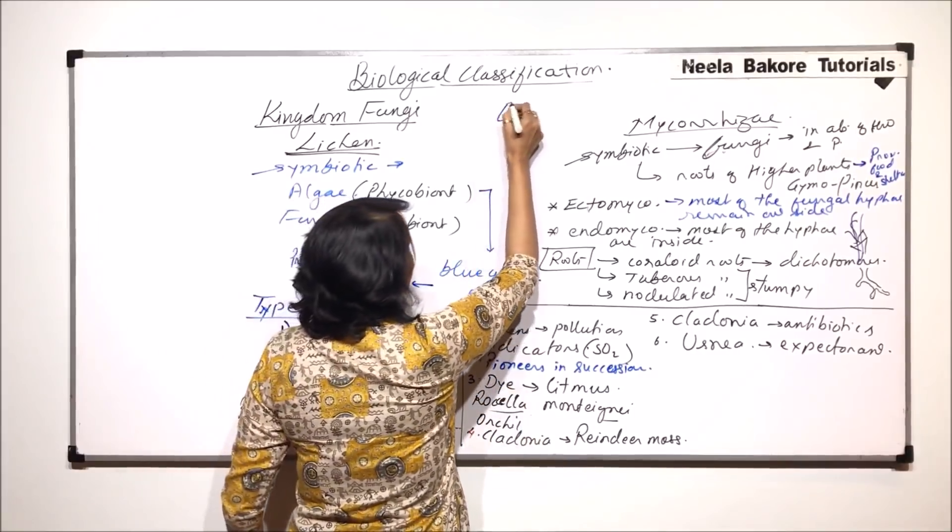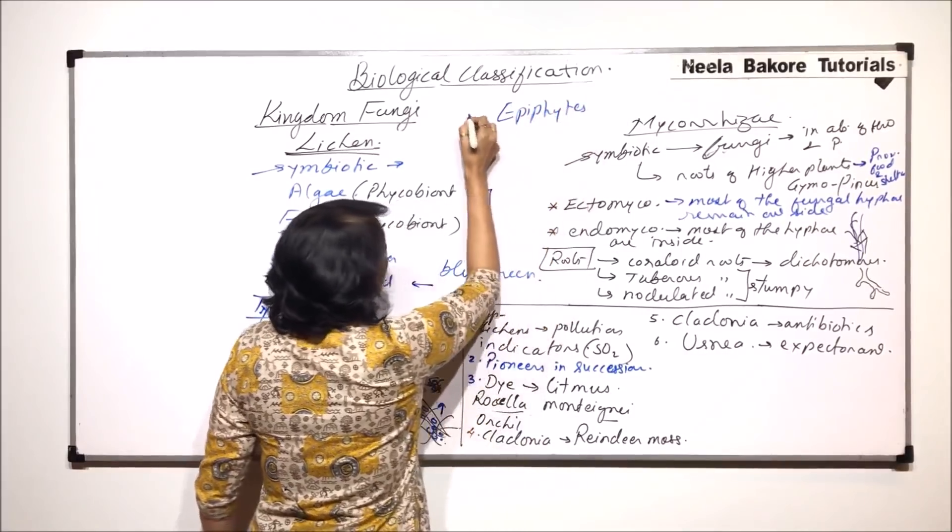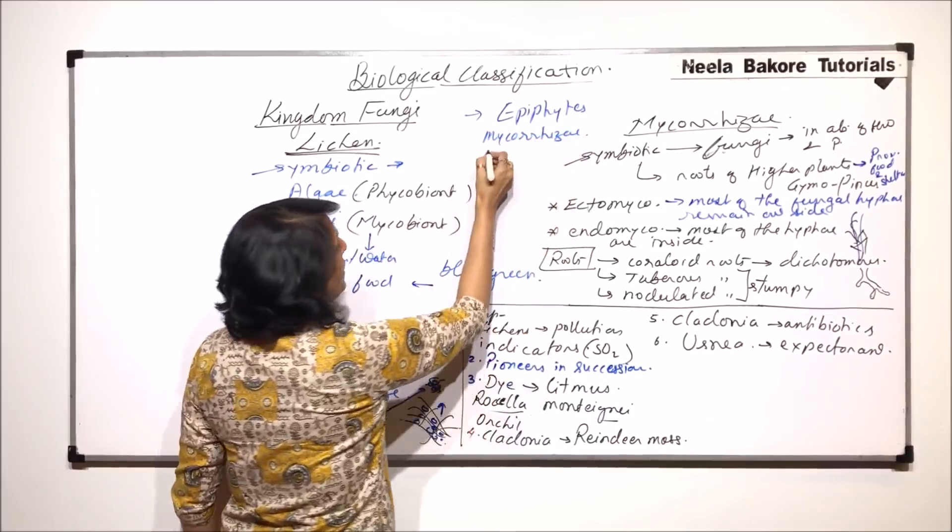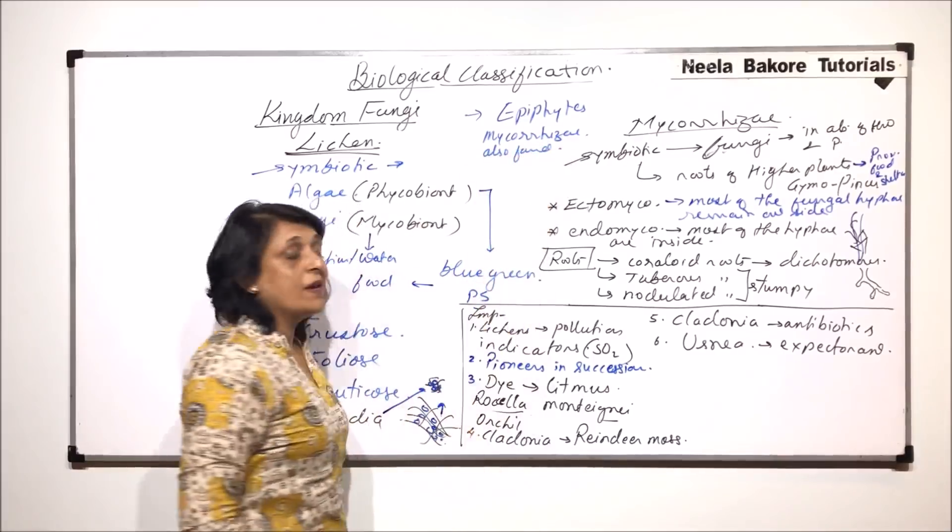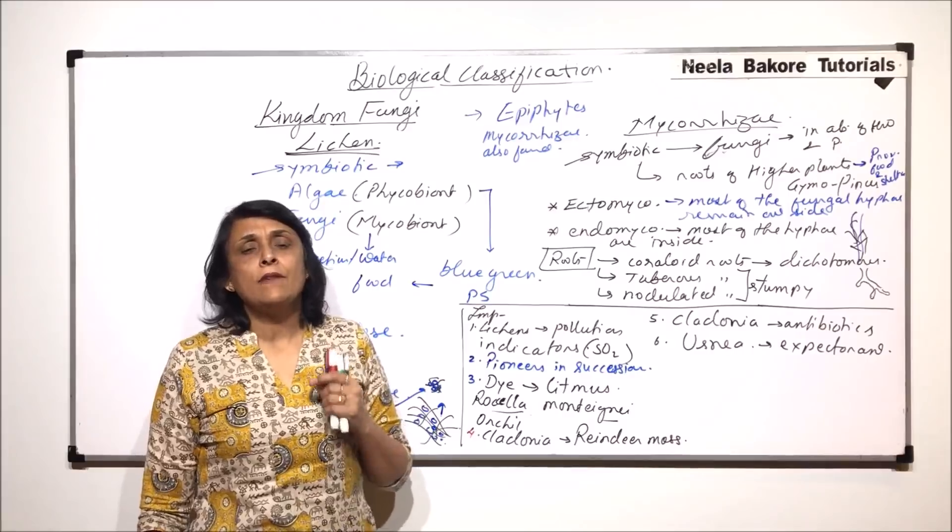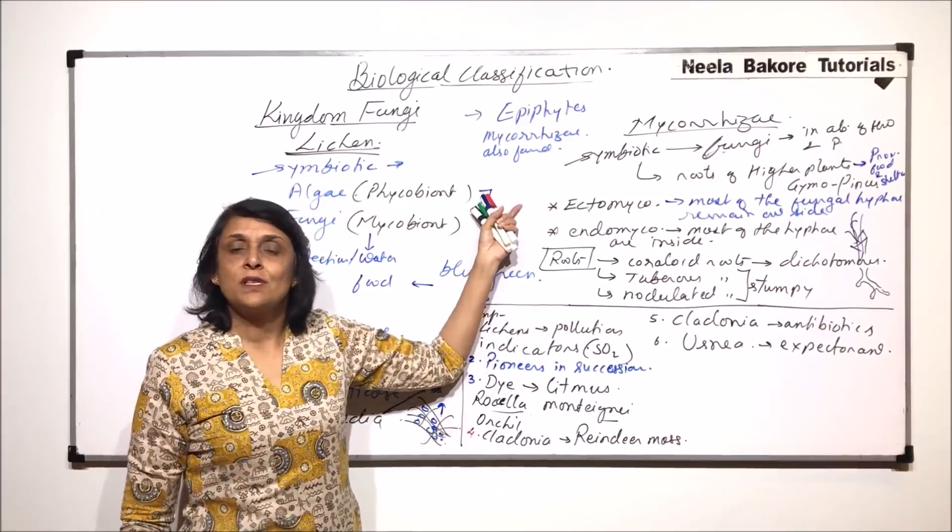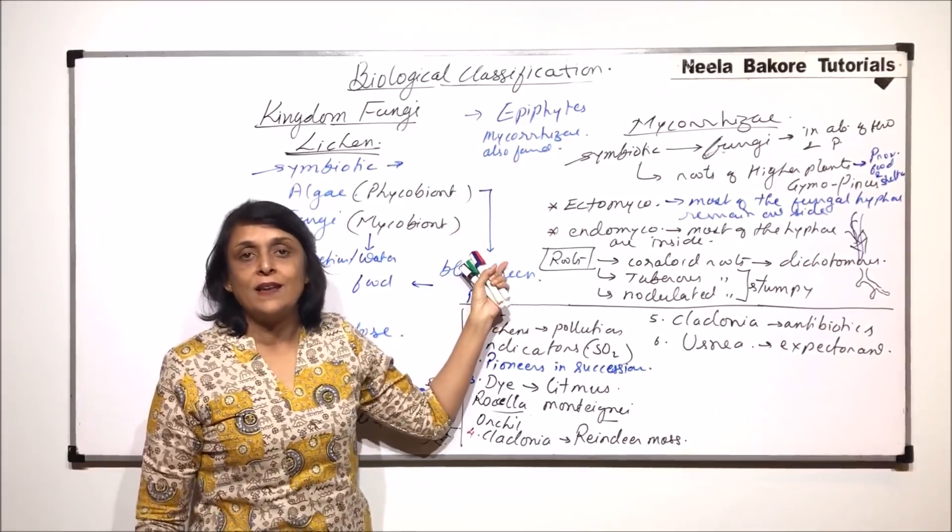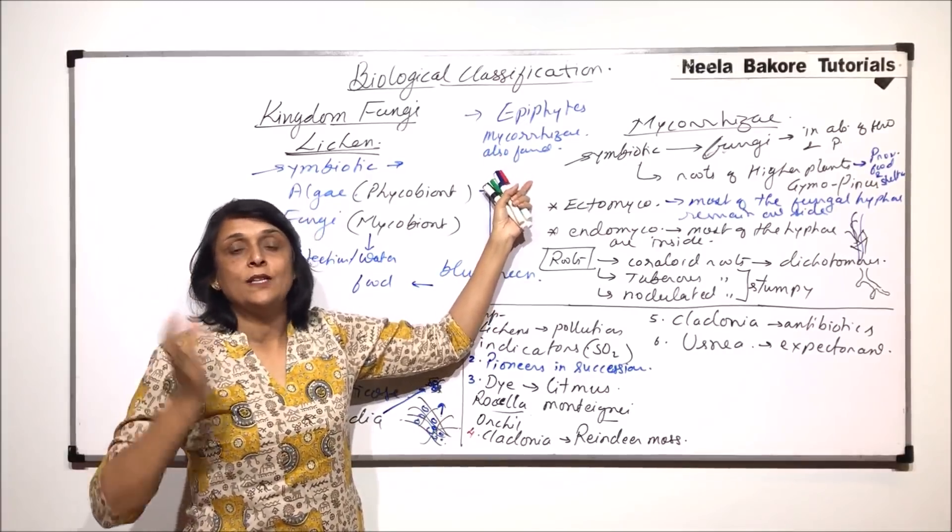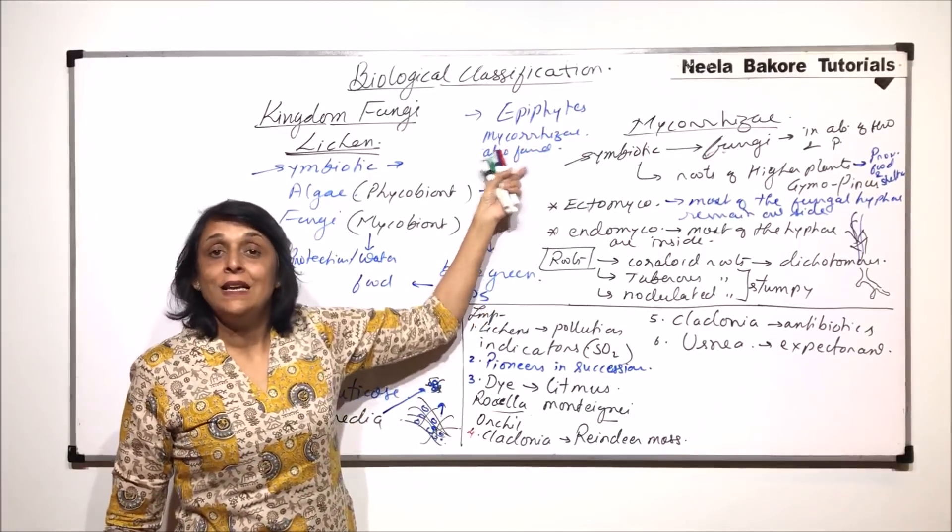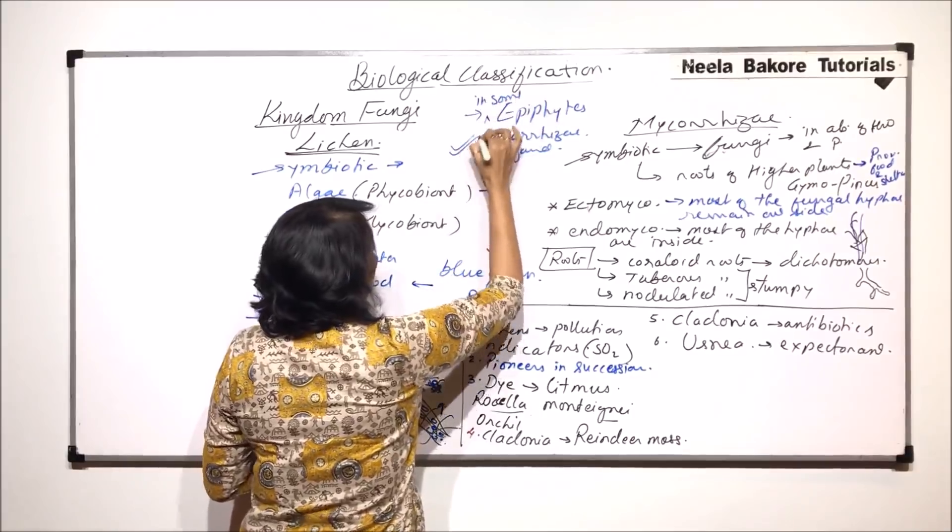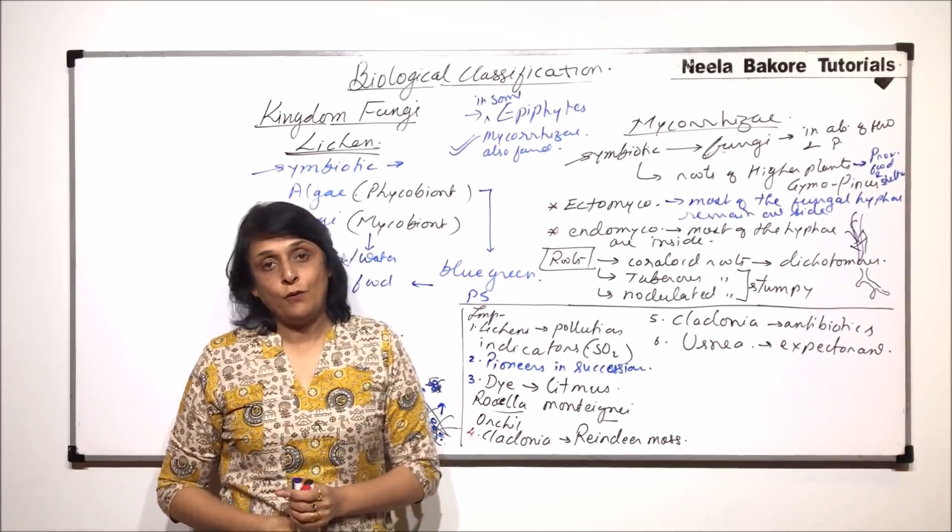One more thing is that in some epiphytes, mycorrhizae are also found. Epiphytes are angiospermic plants which grow on the branches of tall trees in normally evergreen and rain forests, where almost negligible sunlight reaches the ground. These epiphytes are small plants like orchids. In order to have sunlight for photosynthesis, they grow on branches of tall trees, and they have mycorrhizae association, but it is not in all epiphytes.